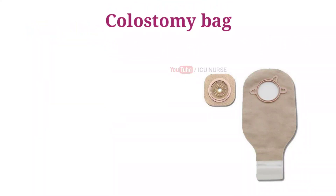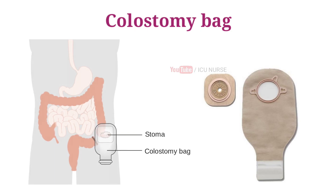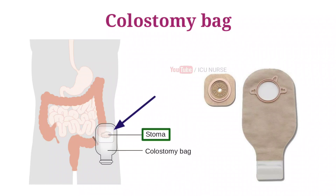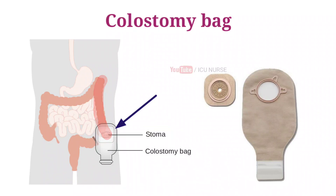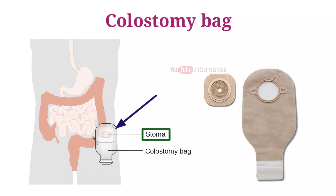A colostomy bag is a plastic bag that collects fecal matter from the digestive tract through an opening in the abdominal wall called a stoma. Doctors attach a bag to the stoma following a colostomy operation. During a colostomy, a surgeon brings out a portion of a person's large intestine through the stoma. The colostomy bag collects stool as it passes through the gut. A person often needs a colostomy due to injury, disease, or another issue with the lower bowels. In some cases the colostomy is temporary; in others, such as removal of the colon due to colon cancer, it may be permanent.